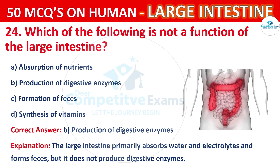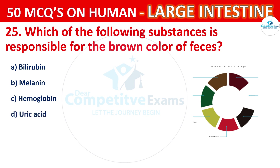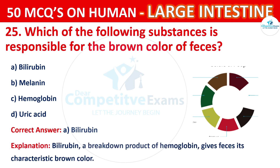Question 25. Which of the following substances is responsible for the brown color of feces? The options are: Bilirubin, Melanin, Hemoglobin, or Uric acid. The correct answer is A, i.e. Bilirubin. Bilirubin, a breakdown product of hemoglobin, gives feces its characteristic brown color.